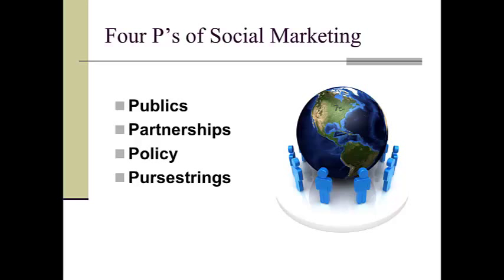Let's look at an example of these four P's in play. Let's say you were designing a public education campaign on the benefits of exercise. Let's identify the components of the four social marketing P's as they might apply to that health-related campaign.